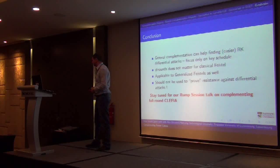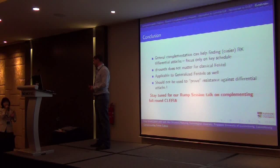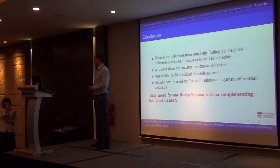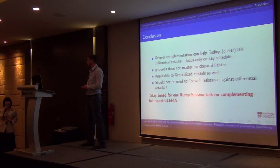Another question: you have shown results on the Davies-Meyer mode of Camellia with a 128-bit key, without FL or FL-inverse — without the non-linear layers. Have you examined the complexity for the version with those layers? Actually, we can pass one of the non-linear layers for only one chaining value; we can find only one but not the second. So it's not going to work for two layers. At least the probability is going to vary a little bit — it's not going to work for the original version.